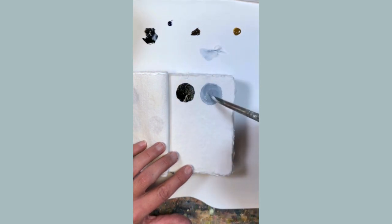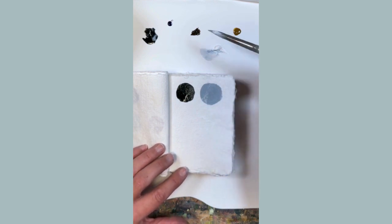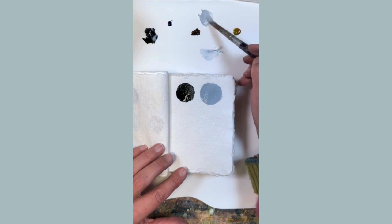If I add the grey, which actually has a black pigment in it, the Payne's grey, it makes it into a darker tone, with the black added to it.